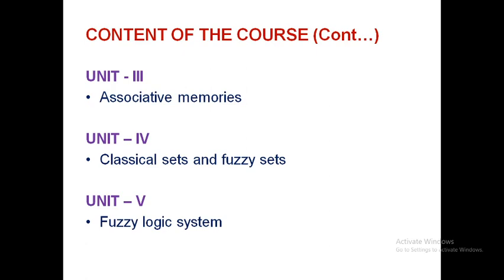The fourth and fifth units are related to fuzzy logic systems. In the fourth unit we will see classical sets and fuzzy sets — what the difference is, and what fuzzy means in general. Instead of saying yes or no, one or zero, you can say something in between. Based on rules, the fuzzy logic system works. We will also cover properties of fuzzy logic sets, operations, relations, membership functions, and fuzzy relations.